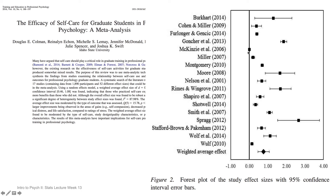The width of the bars represents how much variability there is between people in whether self-care was useful or not. The black vertical line represents no difference between people who do versus don't engage in self-care — an effect size of zero. Anything to the right of the black line is evidence in favor of self-care's benefit. The further from zero, the greater the benefit. For example, the SPRAG 2012 study showed the biggest effect, while the McKinsey et al. 2006 study showed no benefit — an effect size of zero.